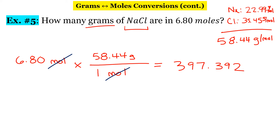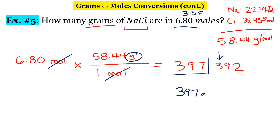We want to make sure our units are diagonal from each other so they cancel out. 6.80 times 58.44 gives us 397.392. Our original number 6.80 has three significant figures — that trailing zero counts because it's after a decimal. Going from left to right, we underline the first three significant digits. The fourth digit is 3, which is less than 5, so our final answer is 397 grams.